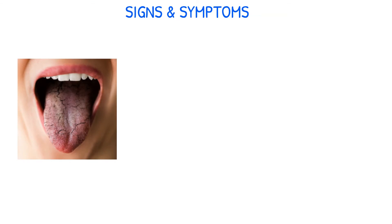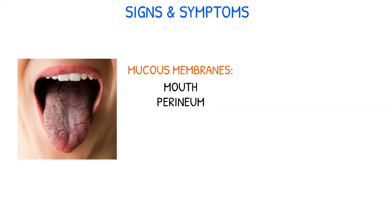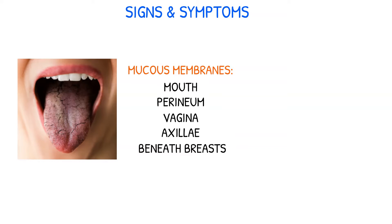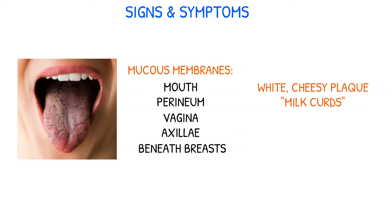The signs and symptoms of candidiasis depend on the location that is affected. The mucous membranes of the mouth, perineum, vagina, axillae, and beneath the breasts are frequently affected. Candida infection appears as a white, cheesy plaque that can resemble milk curds, along with red and yellowish areas on the mucous membranes.